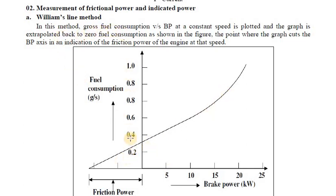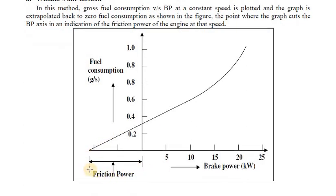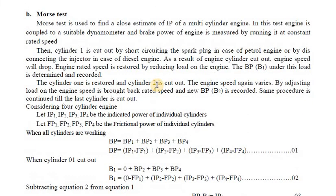In the Williams Line Method, the gross fuel consumption plotted against brake power at a constant engine speed is extrapolated back to zero fuel consumption, as shown in the figure. In the positive area the graph is plotted, and then extrapolated towards the negative side where it cuts the brake power axis. The difference from zero to that negative intercept gives the friction power. This is a simple method to measure friction power.